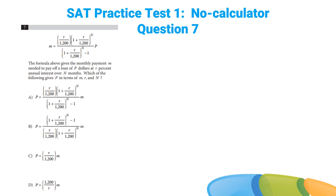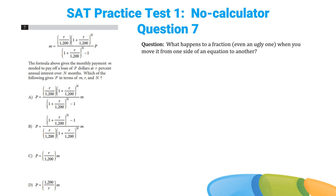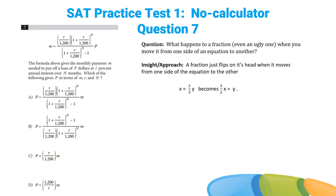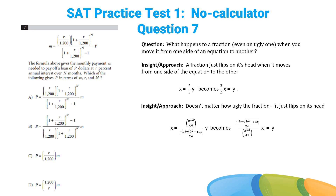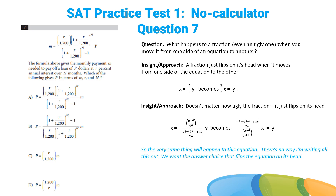Question 7 is all about trying to intimidate you, but in reality it's super easy. What they're really getting at is: do you know what happens to a fraction when it moves from one side of an equation to the other? It just flips on its head. For example, x equals 2/3 y becomes 3/2 x equals y. The 2/3 just flips and becomes 3/2. Answer choice B flips the equation on its head.